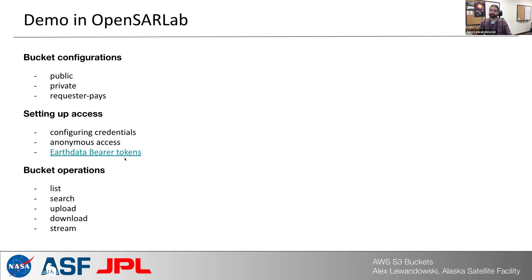That streaming approach requires access with an Earth Data bearer token. I'll demonstrate how to set up an Earth Data bearer token. Finally, we'll look at some basic bucket operations: listing the bucket to see its contents, searching for a particular file, uploading, downloading, and streaming data directly to memory.